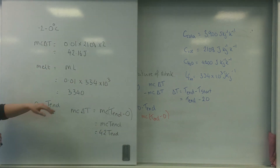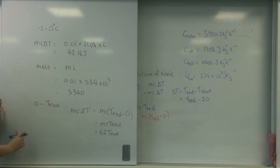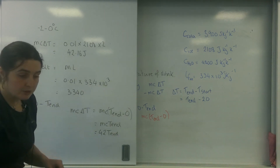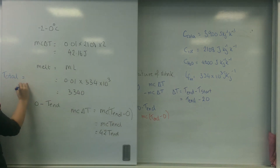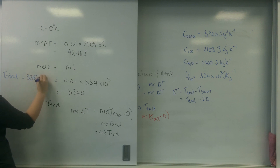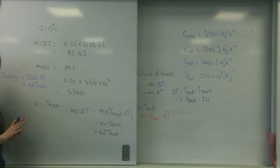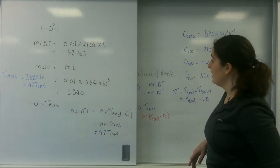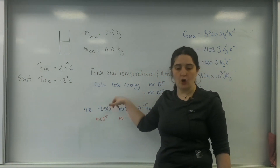So in total, the energy gained by the ice is 3382.16 plus 42 T-end joules. And I know that equals whatever energy the cola lost.